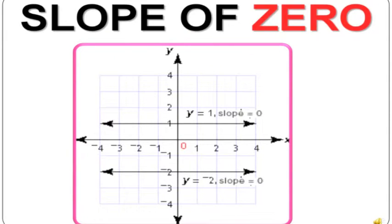Slope of zero. When the slope is zero, the equation will look like y equals a number, because it does not include an x value. Therefore, slope equals zero.